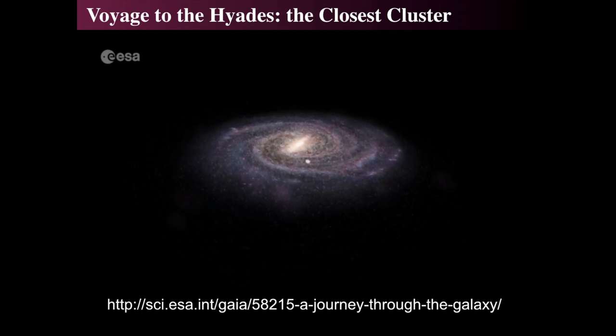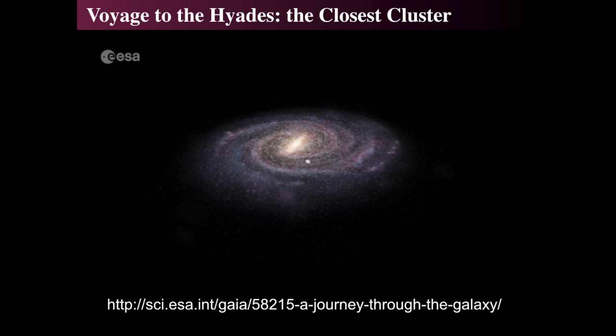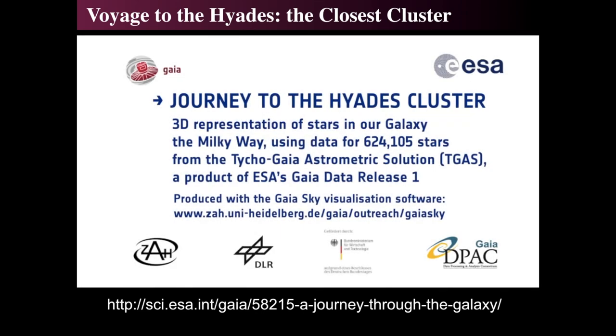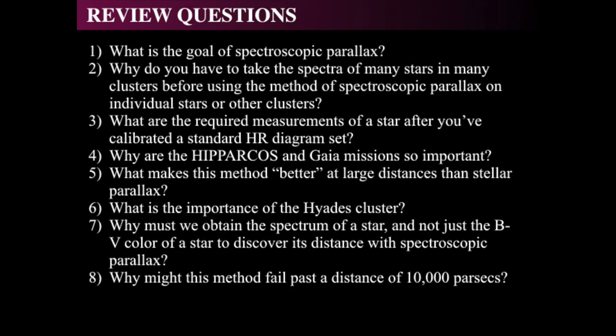We're about two thirds of the way out from the center. There are numerous other objects out there in the cosmos, and our Milky Way is just one galaxy of millions. I invite you to go take a look at the Gaia website and all of that amazing material. Distances to stars are really critical because they give us distances to galaxies, the size of our Milky Way, and eventually the size of the universe. So spectroscopic parallax is the first step in that great quest. We'll see you next time.